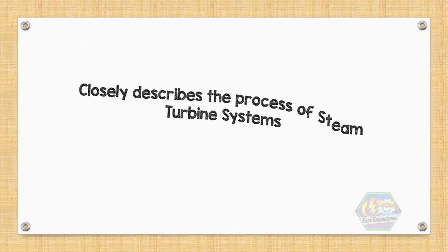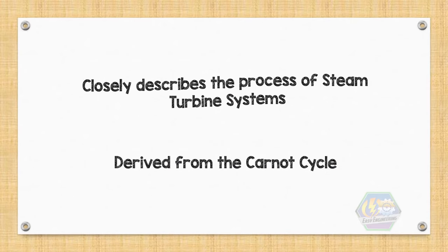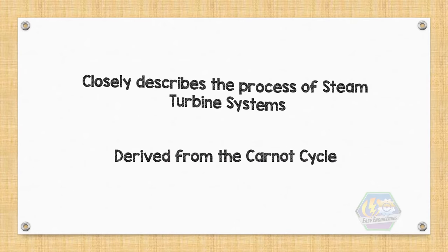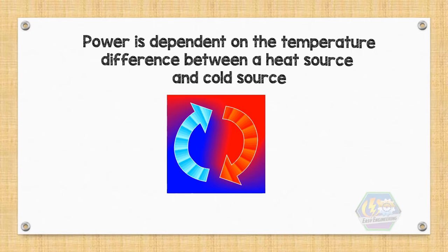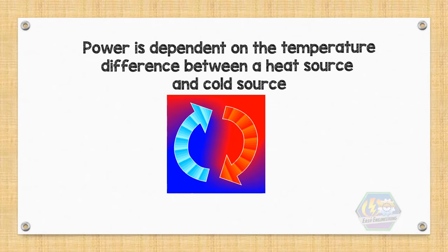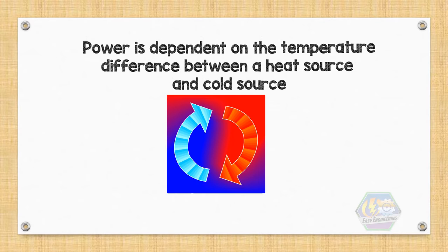One of the best definitions for this cycle is that it closely describes the process of steam turbine systems and is derived from the Carnot cycle, the most efficient thermodynamic cycle, which tells us that power is dependent on the temperature difference between a heat source and cold source. The higher the difference, the more mechanical power can be efficiently extracted out of heat energy.